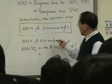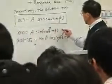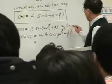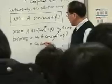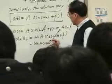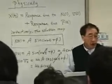This is 0, and there is a phi, so that is A sine phi, and this is omega n A or x dot, right? Okay.